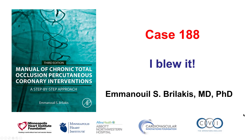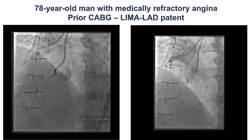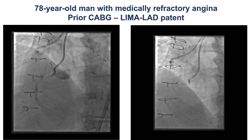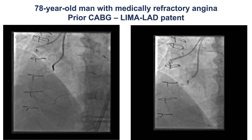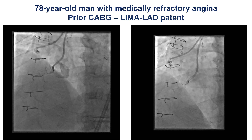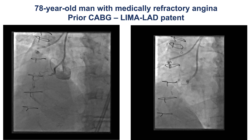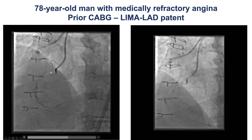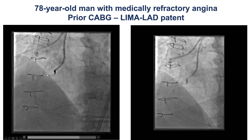Hi, this is Manos Brilakis, and this is case 188 for the Manual of CTO Interventions. This is a case in which we literally blew it. The patient was an elderly gentleman with previous coronary bypass graft surgery who presented for PCI of a right coronary artery CTO in an attempt to treat angina.